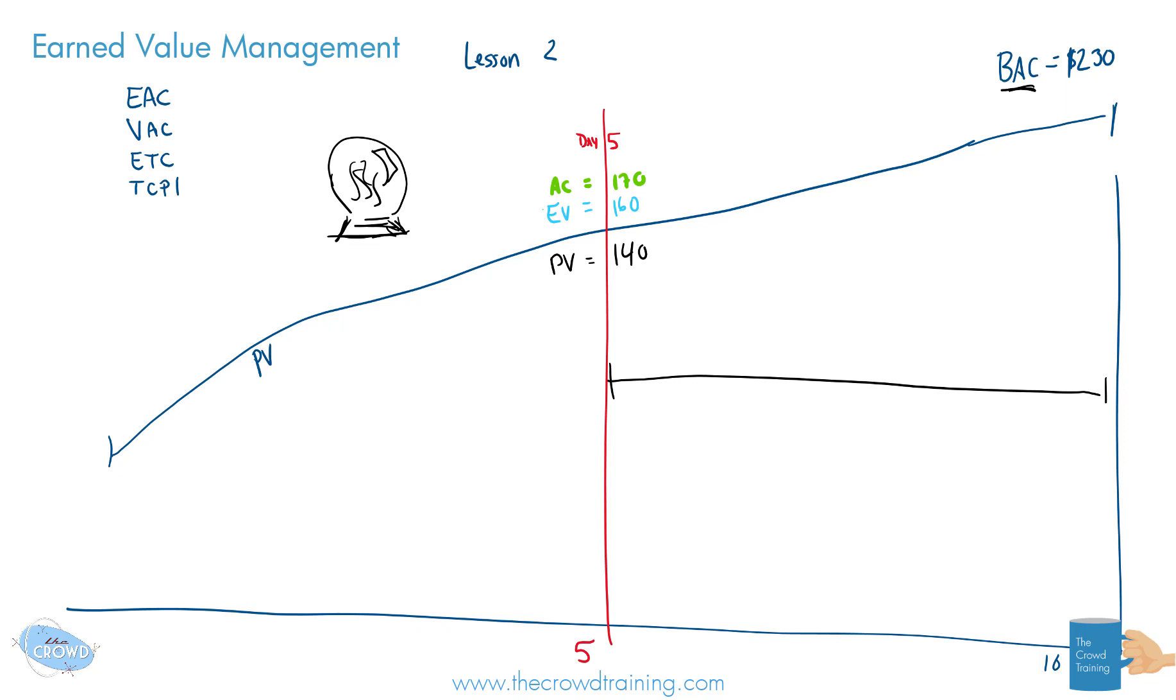But based on this new information, because that budget at completion was based on what we planned from point A, or day one, now we're looking at it at day five. More information is available, things have changed, and what does that mean? So there are a few different ways for us to find the estimate of what the budget should be like at completion. A lot of it depends on what variables are available to you and the information that might be found in a project management professional exam question or just in your work experience and the data that you have.